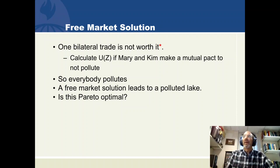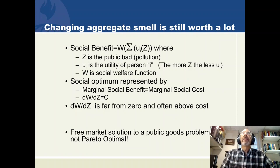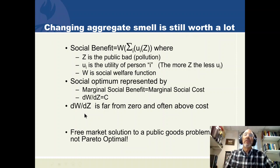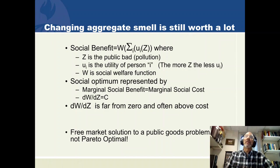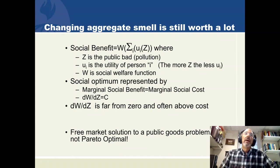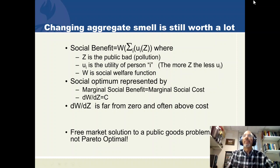A free market solution is probably going to lead to a polluted lake and a lack of Pareto optimality. On a social scale, the marginal benefit of eliminating one ton of sewage — dW/dZ equaling C — is achievable, but only if everybody chips in simultaneously. This society doesn't have a way to scale up all of these trades. The residents of the lake community can be made better off without anybody being made worse off, but they can't get there on their own. They need to solve their public goods problem.